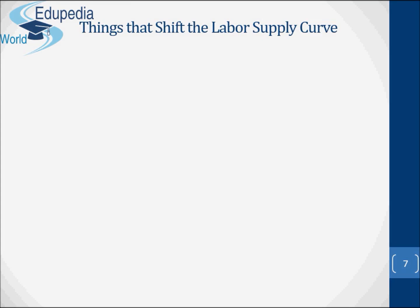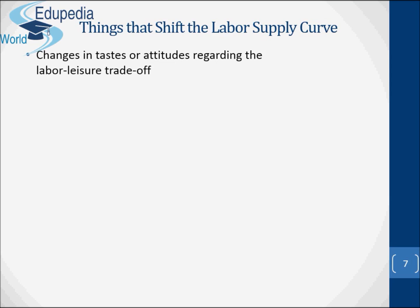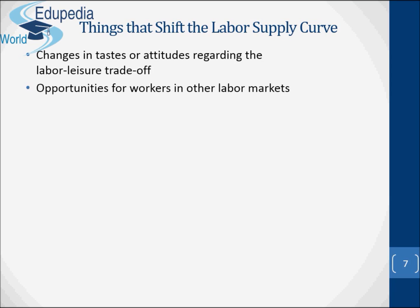Let's see the things that shift the labour supply curve. The first point is related to changes in tastes or attitudes regarding the labour-leisure trade-off. Economists confirm that a change in attitudes about female labour force participation over the past 50 years has dramatically shifted the labour supply curve rightward. The second point is related to opportunities for workers in other labour markets, and we also have another factor related to immigration.